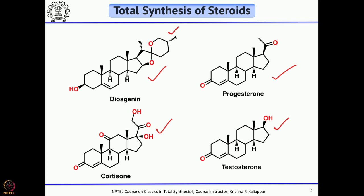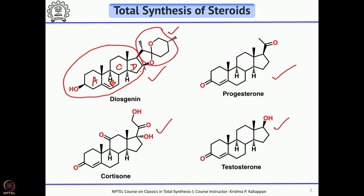The synthesis I am going to talk about starts with diosgenin. You can see that diosgenin has the core structure of the three steroids we are going to discuss today — the A, B, C, D rings. All four rings present in progesterone, cortisone, and testosterone are there. What is not required is the bicyclic spiroketal system. How to get rid of the spiroketal and convert into the required side chain in progesterone, cortisone, and testosterone — that is what we are going to discuss.